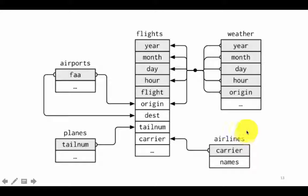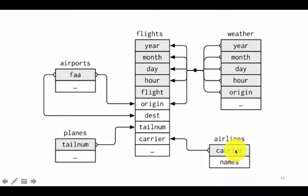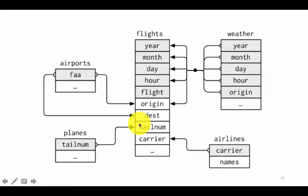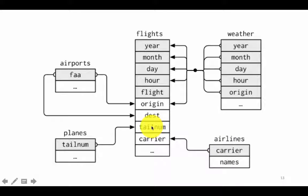Similarly, for airlines, United Airlines is going to appear only once in that table. For a specific tail number, a particular aircraft is going to appear only once in the planes table, but it'll appear many times in the flights table, because a particular aircraft may be operated on many flights. A particular airline is obviously going to operate many flights, and so on.